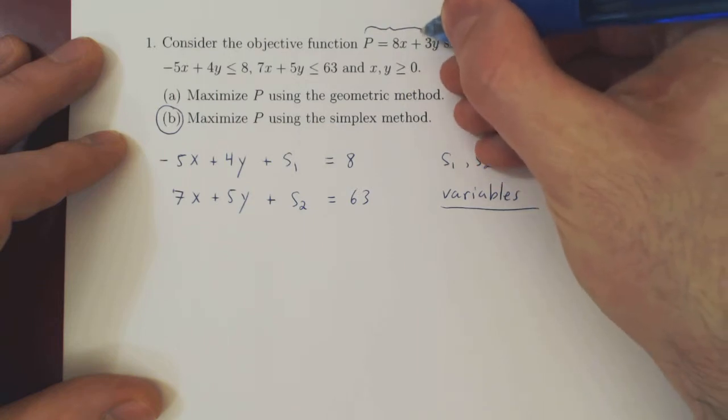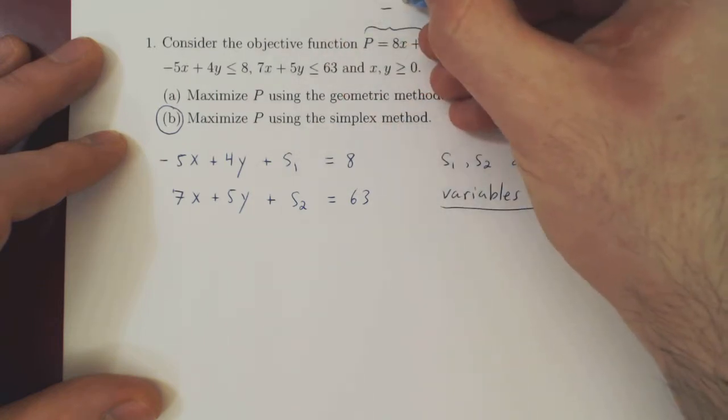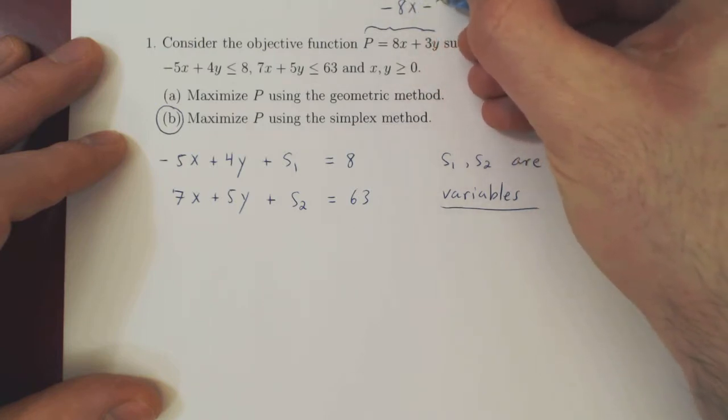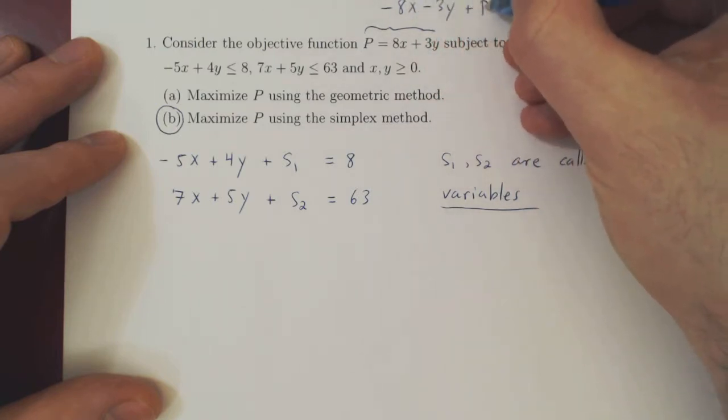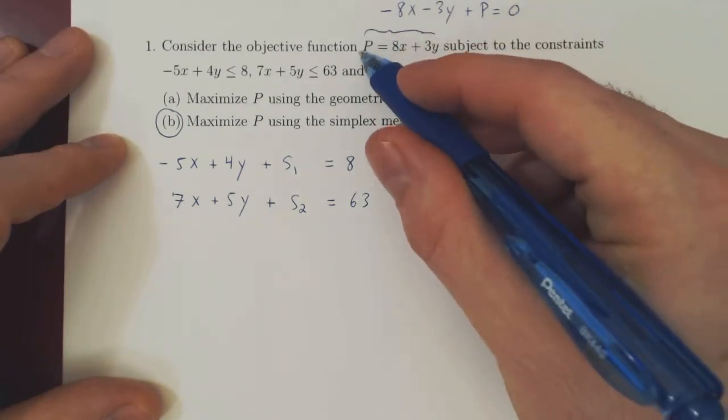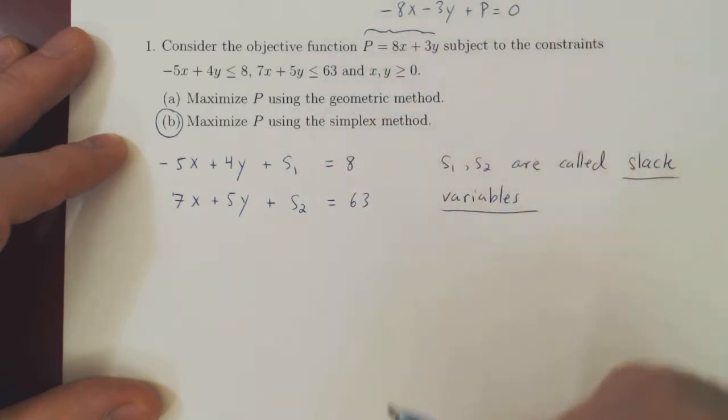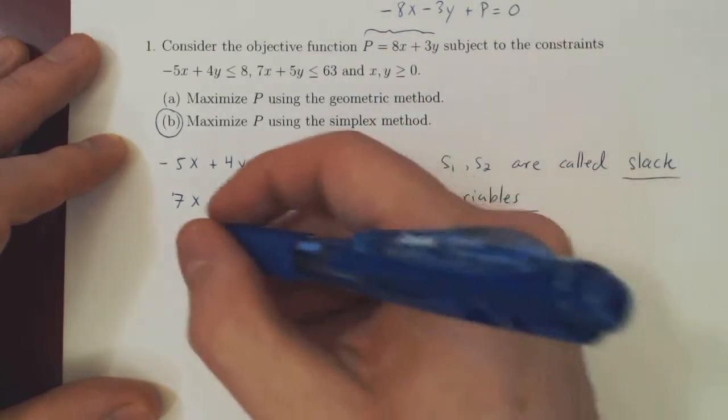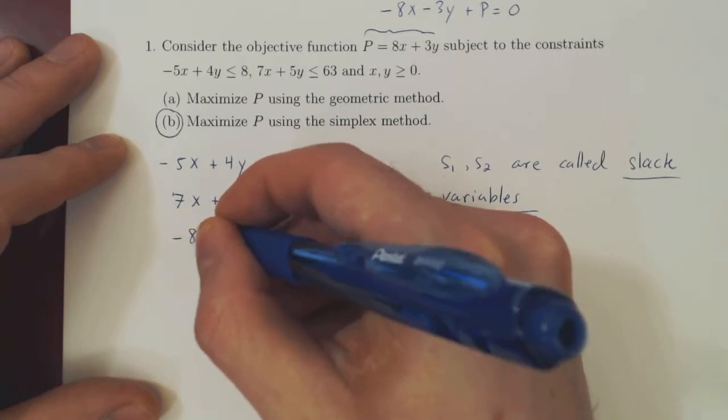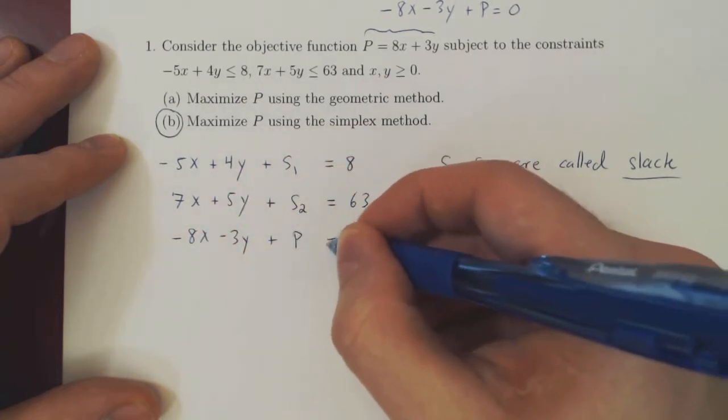So the equality, if you send 8x plus 3y to the other side will become negative 8x, negative 3y plus P equals zero. Always be careful. We always leave P on the left-hand side and send everything else to that side. So this becomes negative 8x, negative 3y plus P is equal to zero.